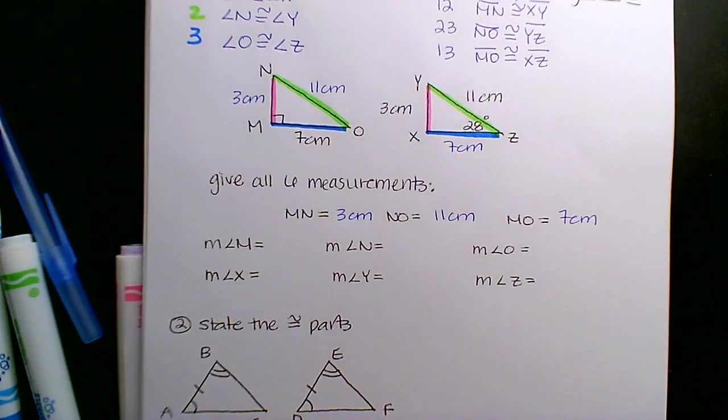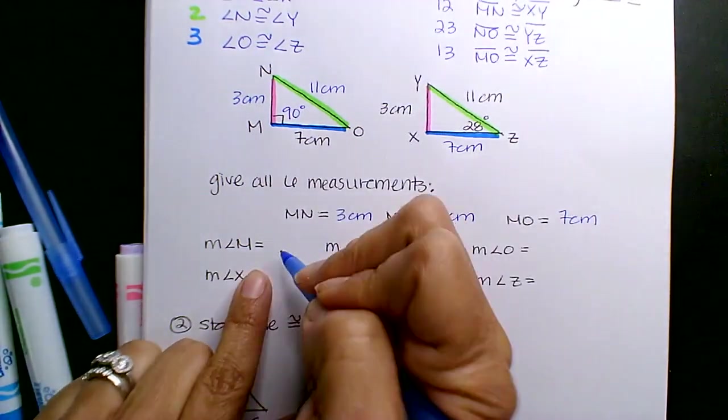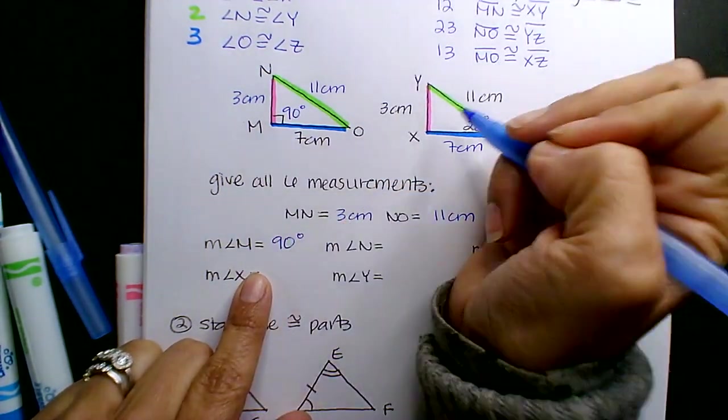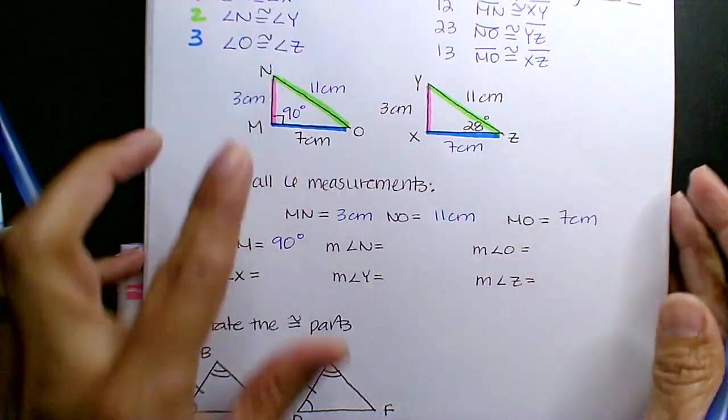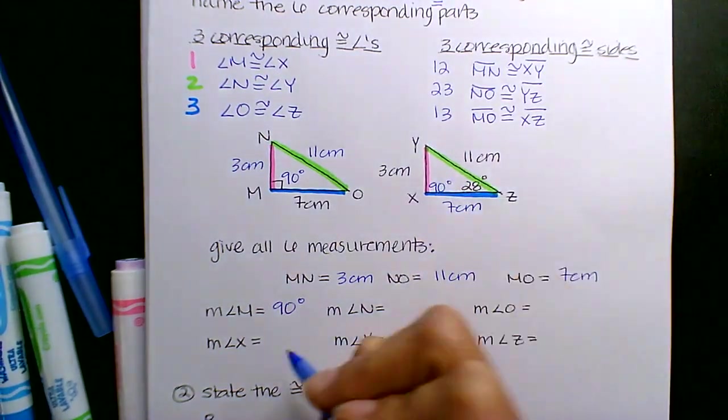Okay, all right, so we do the angles, which you guys were great with. You understand that little box is 90 degrees. So this is 90 degrees. So M correlates to X. So this is 90 degrees.